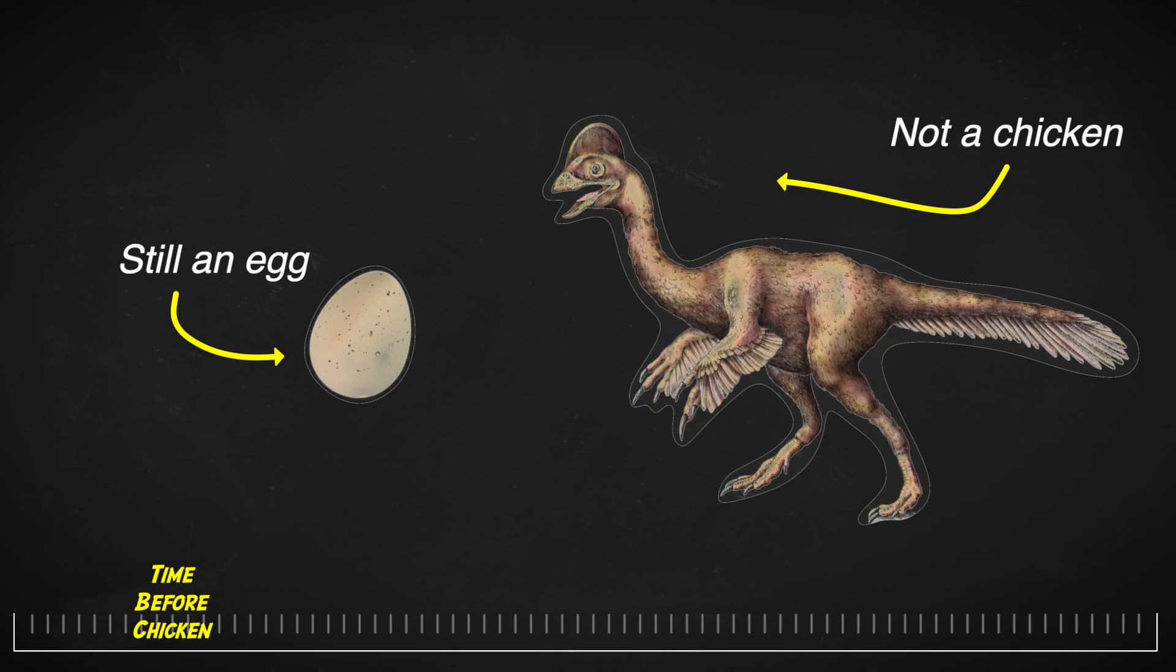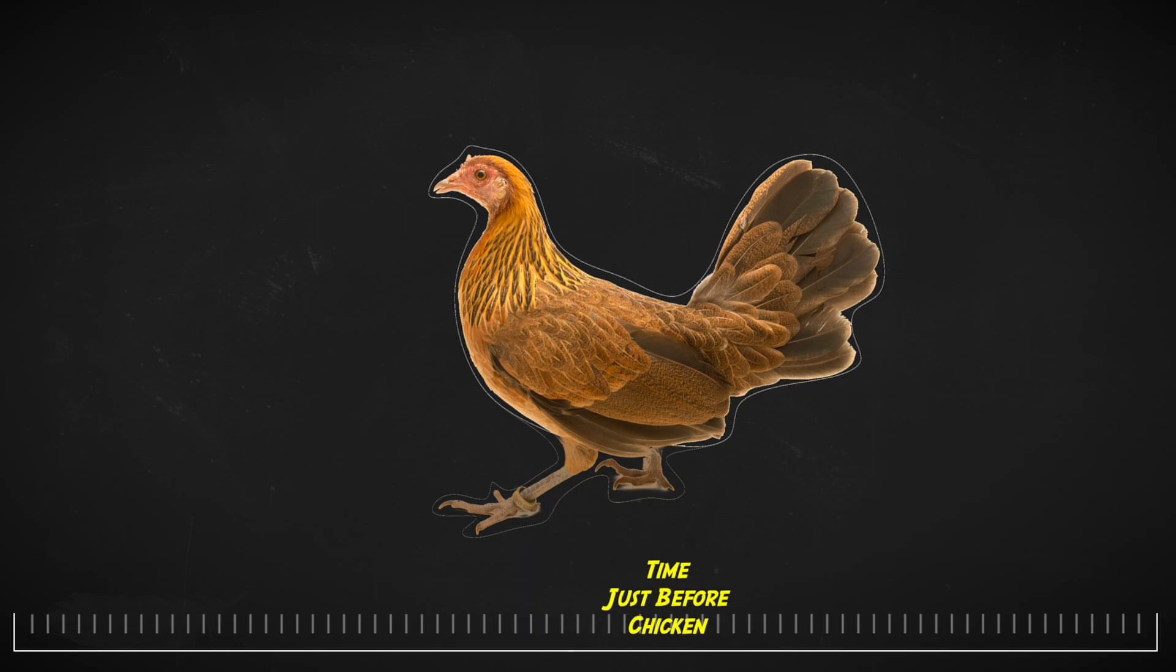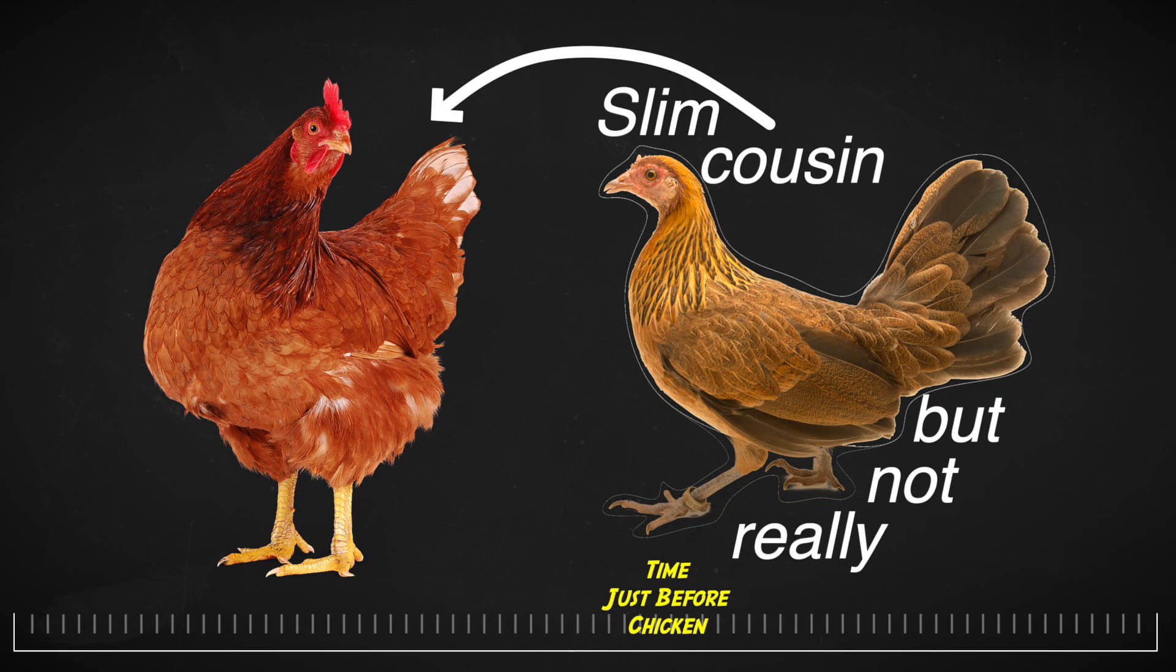Let me rephrase that. The predecessor of the chicken is this bird, a red jungle fowl. You see, it's sort of like a slim cousin of the chicken, but not really a chicken. But like the chicken, it too laid eggs.